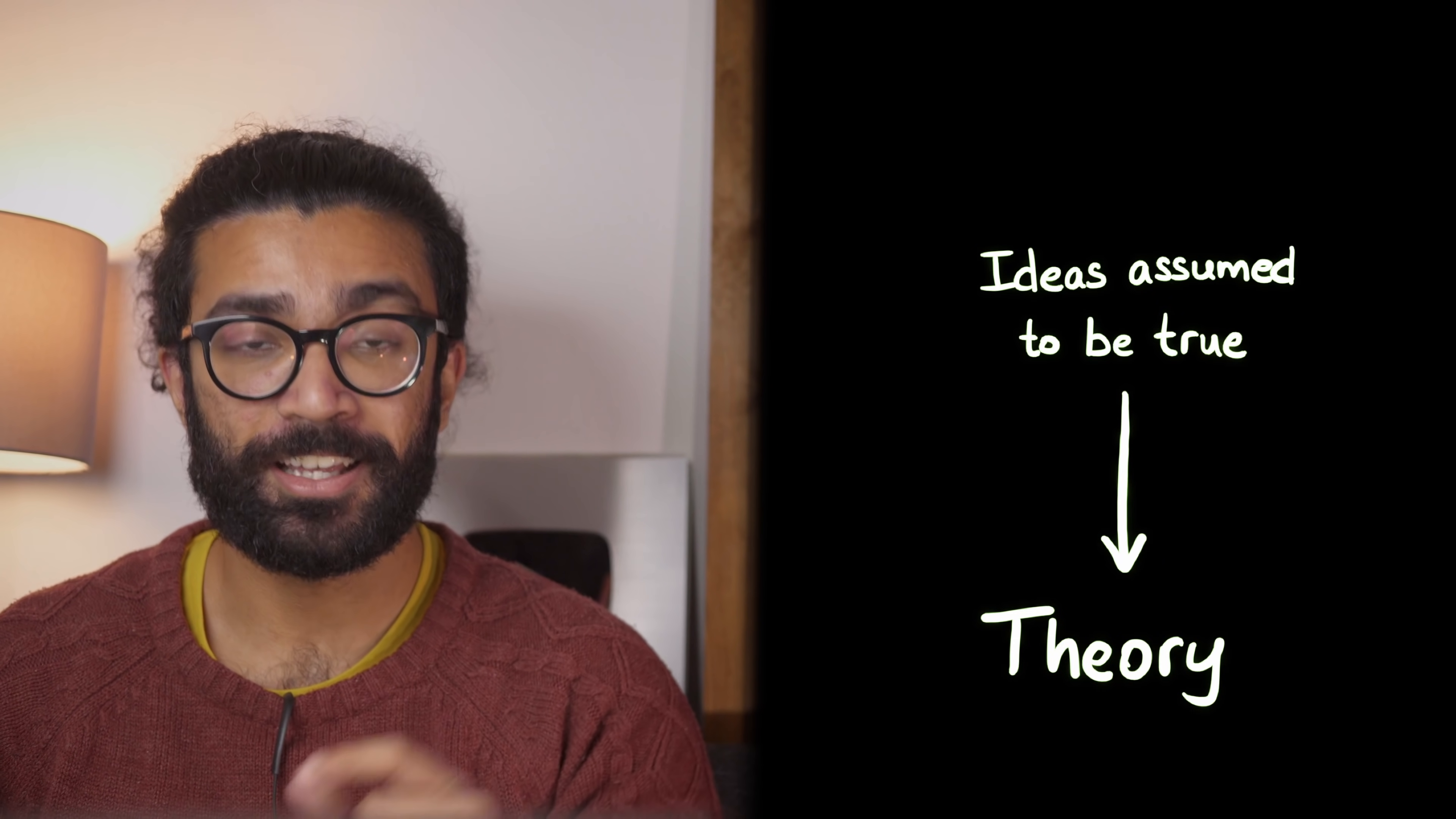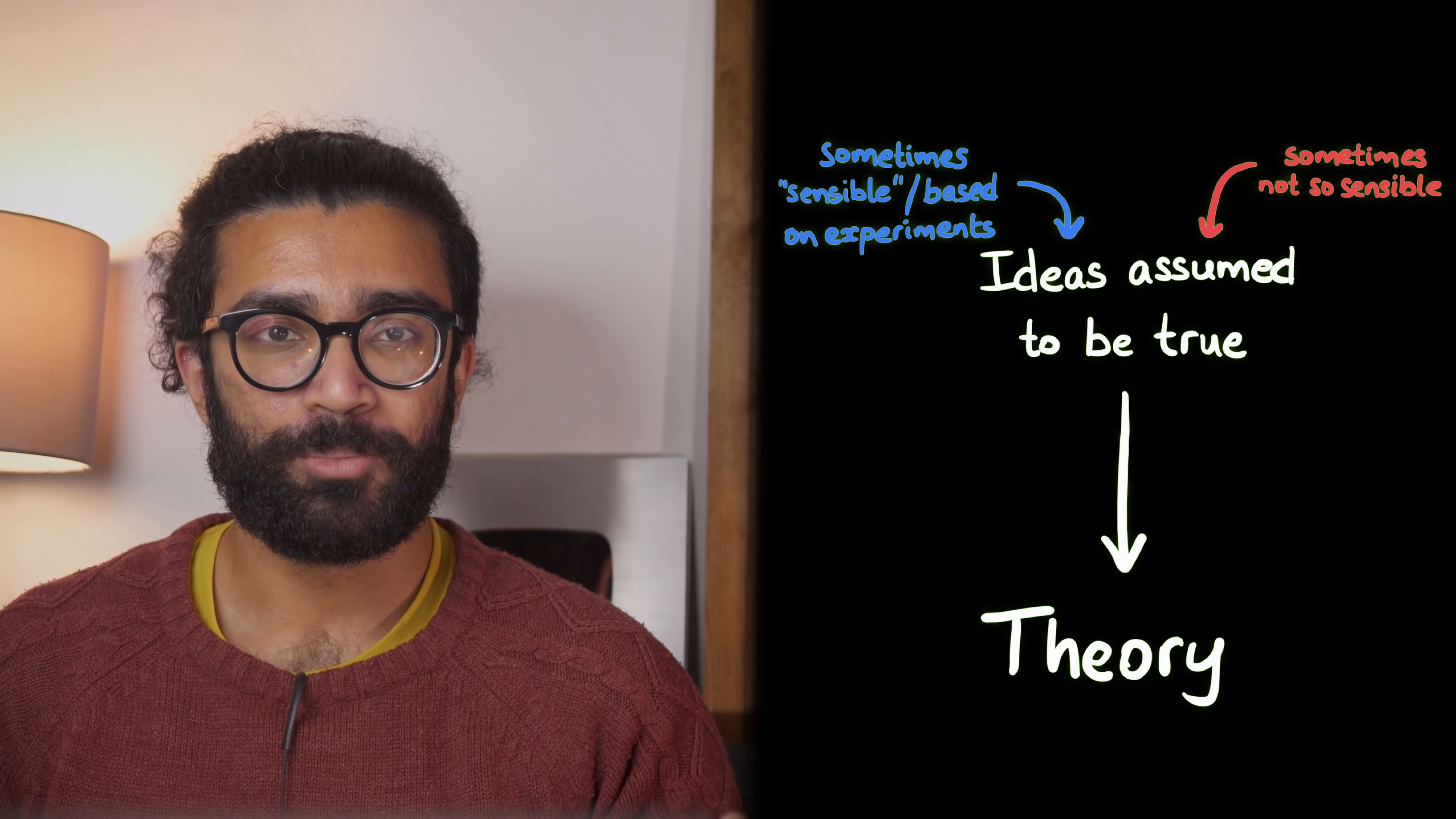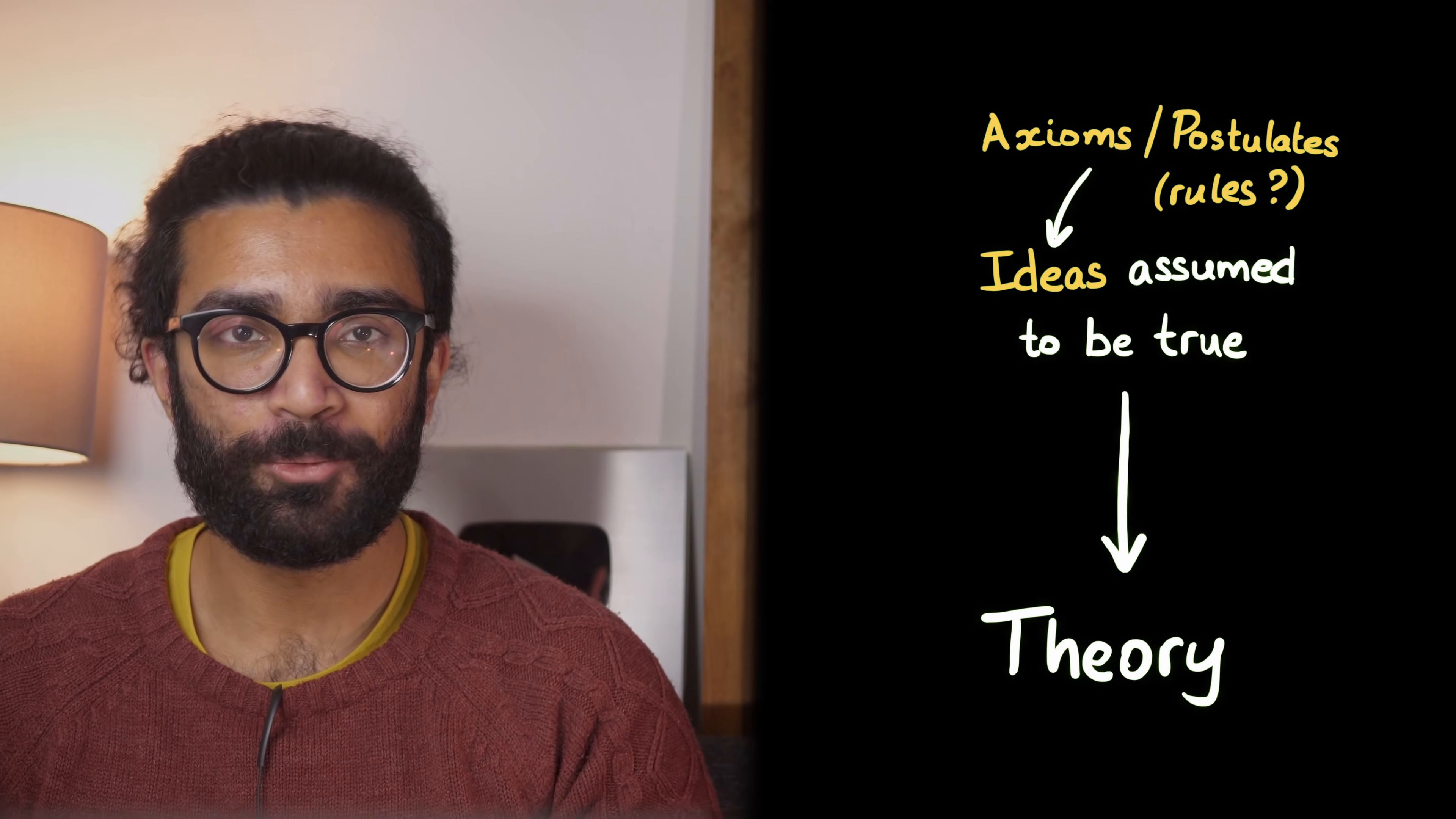Theories in physics are often based on a set of ideas that we assume are true. In some cases, these ideas seem to make sense to us and in other cases, as we'll see shortly, these ideas are just a big WTF. Either way, these ideas that we assume to be true in order to build a mathematical theory are known as axioms or postulates. I like to think of them as the rules that govern the theory we're looking at.